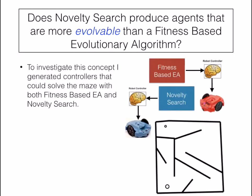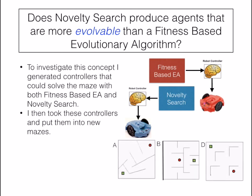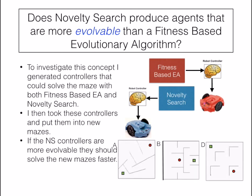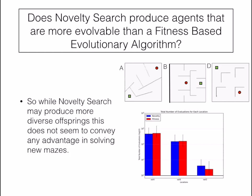To investigate this concept myself, I generated controllers that could solve the maze with both fitness-based EA and NoveltySearch, then took these controllers and put them into new mazes. If the NoveltySearch controllers are more evolvable, they should solve the new mazes faster. In the end, it turns out that NoveltySearch does not solve the new mazes faster. Looking at the bar graph on the bottom right, for each maze location, NoveltySearch and fitness-based EA took a similar number of evaluations to find the solution — a lower number is better. NoveltySearch and fitness are very close, and there is no statistical difference between either of the manipulations. So while NoveltySearch may produce more diverse offspring, this does not seem to convey any advantage when solving new mazes.